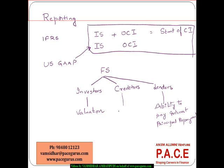Creditors typically look at the income statement from the purpose of the company's paying capacity — whether the company is sufficient to pay back for the raw materials or any other credits the company has taken during the short term.